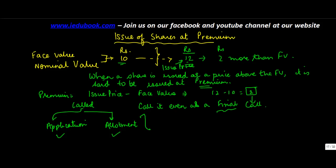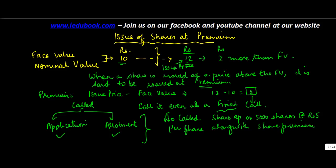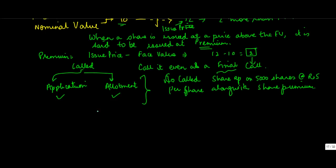Now let us say suppose this Rs. 10 share was called at 2 and someone tells you that the company called share application on 5000 shares at the rate of Rs. 5 per share along with share premium.